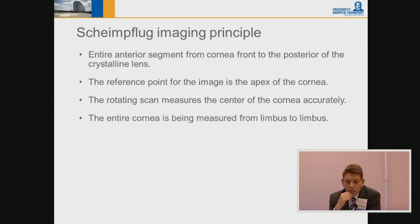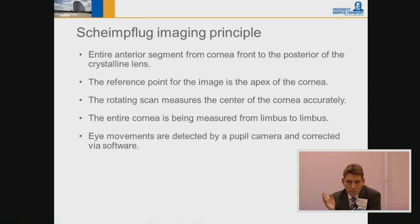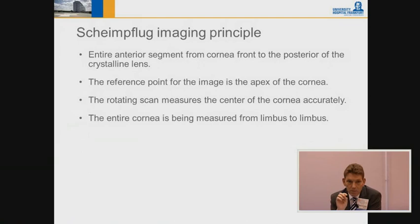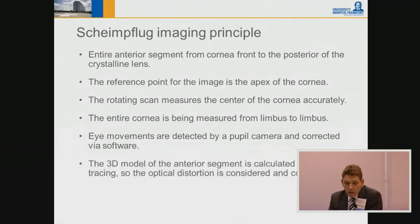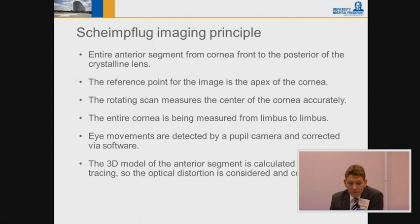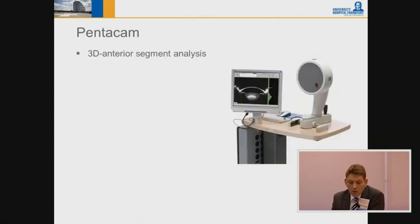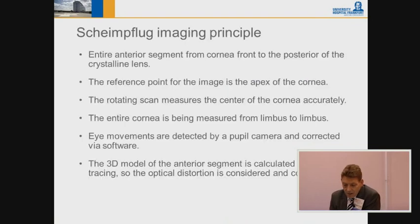The reference point of the image is the apex of the cornea, which is important. It's a rotating scanning device which measures the center of the cornea accurately, which is not true for Placido systems. The entire cornea is measured from limbus to limbus — an advantage compared to topographers, which only cover 5 to 6 mm. Eye movements are detected by a pupil camera and corrected via software, and a 3D model of the anterior segment is calculated by ray tracing, so optical distortion is considered and compensated for.